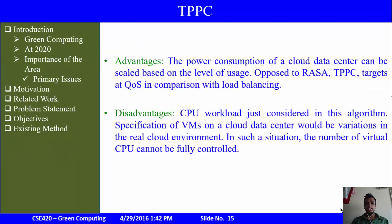Advantages of TPPC: power consumption of a cloud data center can be greatly reduced, and quality of service also increases, making it very beneficial. It is also better than RASA in terms of power consumption. Disadvantages: only CPU workload is considered. Virtual machine specifications in real cloud environments differ, causing configuration issues when switching servers, and the number of virtual CPUs cannot be fully controlled.